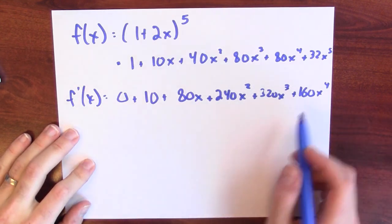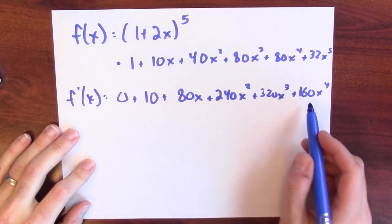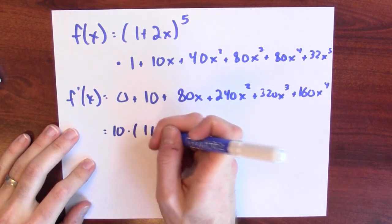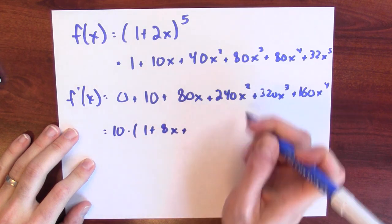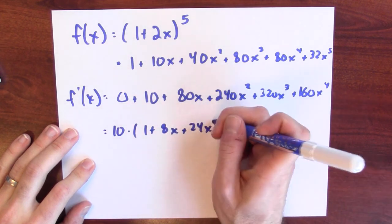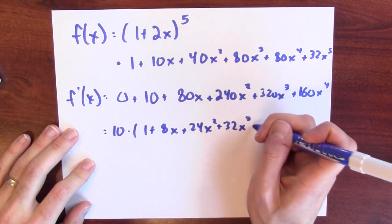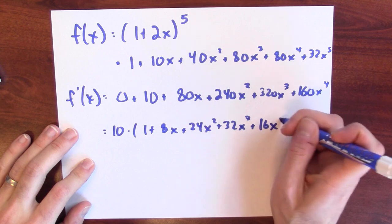Of course, if we're clever at this point, we can also see that this mess factors. So it's sort of believable it's a factor of 10 here, since all of these coefficients end in a zero. This is 10 times 1 plus 8x plus 24x squared plus 32x cubed plus 16x to the fourth.